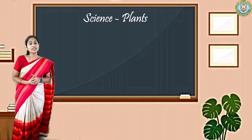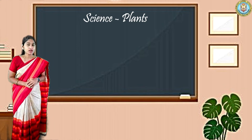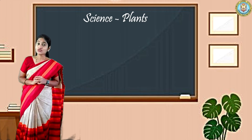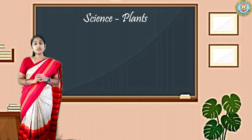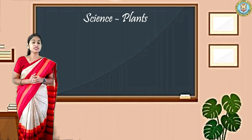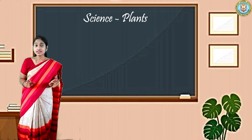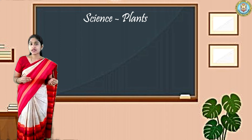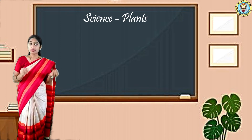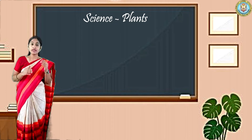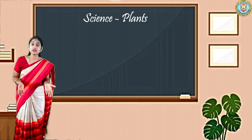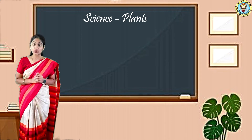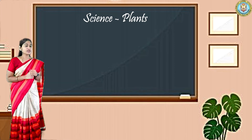Now let us move on to today's concept. Today we will learn about unusual plants. Unusual plants means plants that don't have all the exact parts of a plant. Maybe some plants don't have a stem, maybe some don't have a leaf or flower. Maybe some plants are not green in color. About those plants we will learn in today's class.